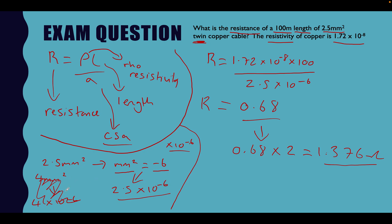We remembered that millimeters squared is always times 10 to the minus 6 in standard form, so 2.5 millimeters squared becomes 2.5 times 10 to the minus 6. We typed it all into the calculator and got 0.68. But we weren't done — we had a twin copper cable with two cores carrying current, so we multiplied by 2, giving us our final answer of 1.376 ohms — the resistance of that cable.